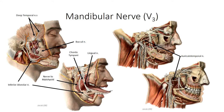The inferior alveolar nerve is the target of nerve block injections just proximal to the point at which it enters the mandibular foramen. This effectively anesthetizes the entire lower jaw on the side of the injection for any sort of dental work that needs to be done.